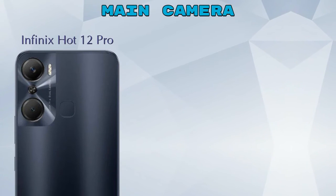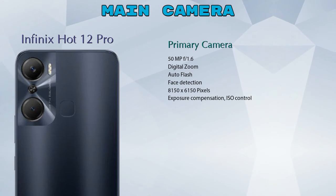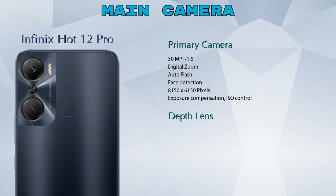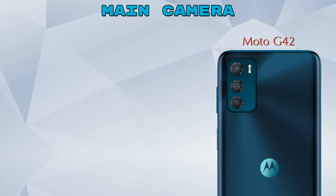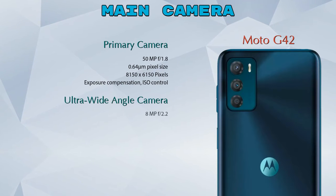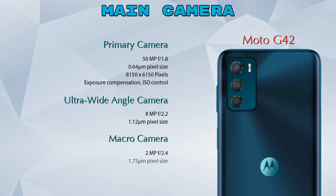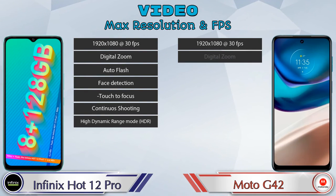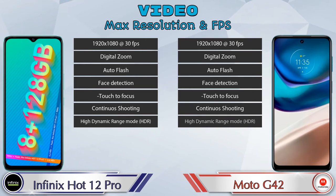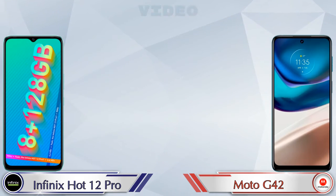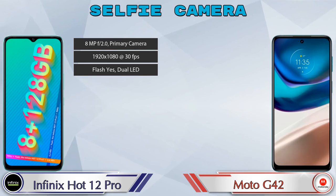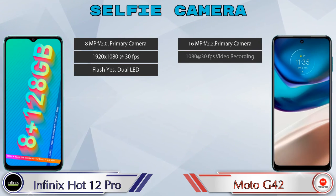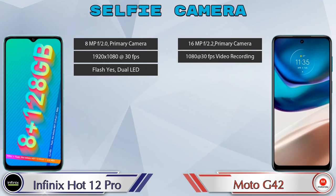Now let's see details about cameras. For the rear camera, the Hot 12 Pro has two cameras — a primary camera and a depth lens. The G42 has three cameras: a primary camera, an ultra-wide angle camera, and a macro camera. For video, both phones have seven different types of features available. For the front selfie camera, the Hot 12 Pro has a single camera with three different features, and the G42 also has a single camera with two features available.